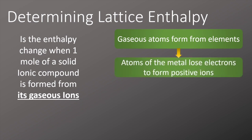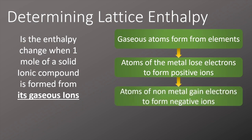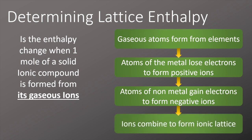So then we've got the gaseous atoms, we're going to turn them into ions. The metal atoms are going to lose electrons to form positive ions, and the non-metal atoms are going to gain electrons to form negative ions. Once we've got those gaseous ions, we can now turn them into an ionic lattice—that's the lattice enthalpy which we're trying to determine through this whole process.